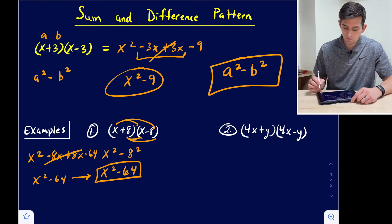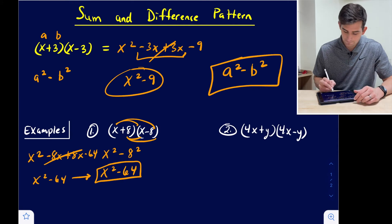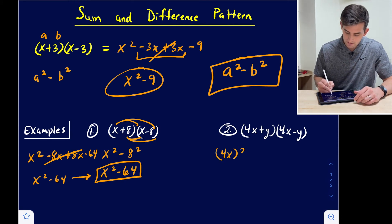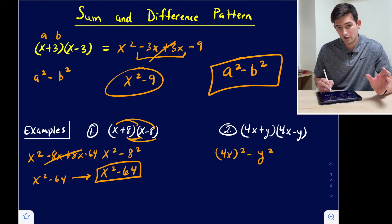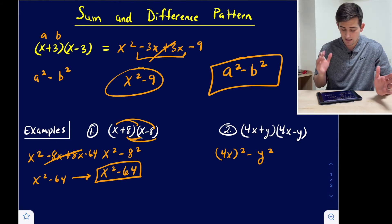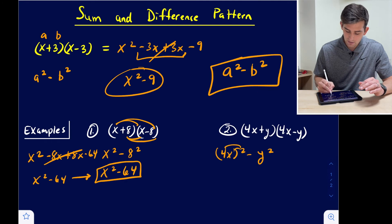And the last one, 4x plus y and 4x minus y. We can say 4x squared minus y squared. Remember whenever you have a coefficient and a variable, give that exponent to both terms. So this would be 16x squared minus y squared.